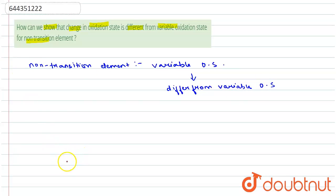Variable oxidation state which is shown by transition elements can differ by one unit, while the oxidation states shown by non-transition elements differ by two units.